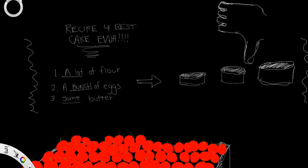And the recipe called for a bunch of eggs, add some butter, and a whole lot of flour, then every person using this recipe would have a different interpretation of the amount of ingredients needed to make the cake.